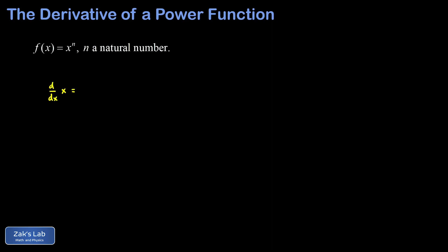Before we get into our derivation, I want to give a quick reminder of some previous results. We've already computed some derivatives of power functions. The derivative of x is 1. The derivative of x squared, computed directly using the limit definition, turned out to be 2x. Finally, we computed the derivative of x cubed using the limit definition and that turned out to be 3x squared.